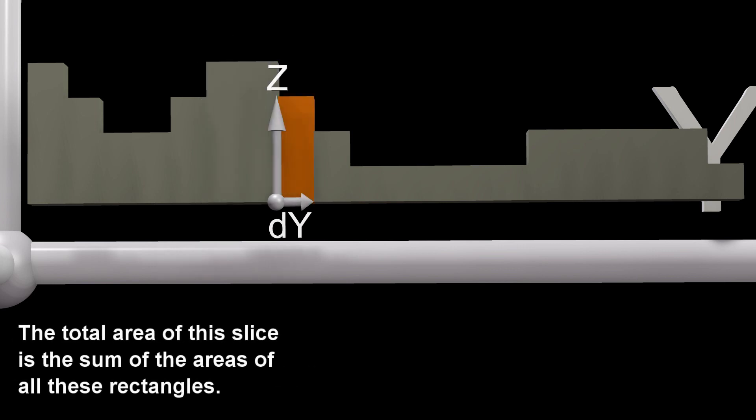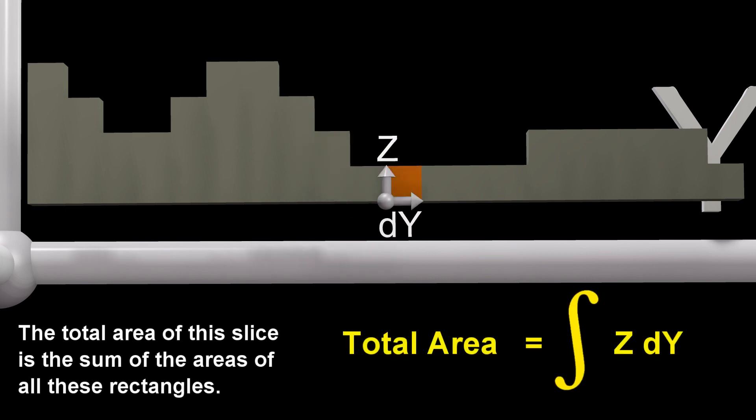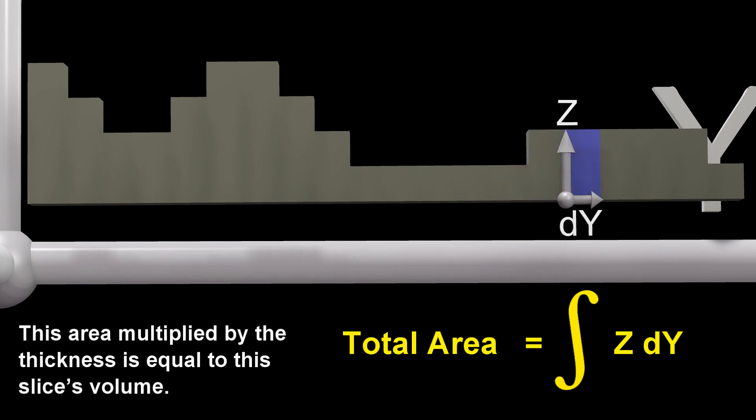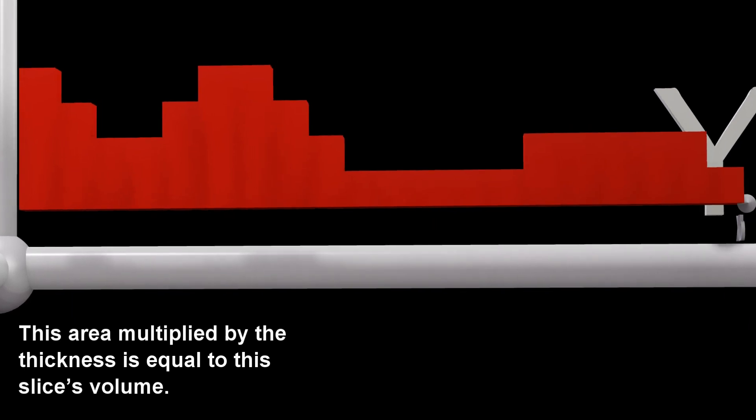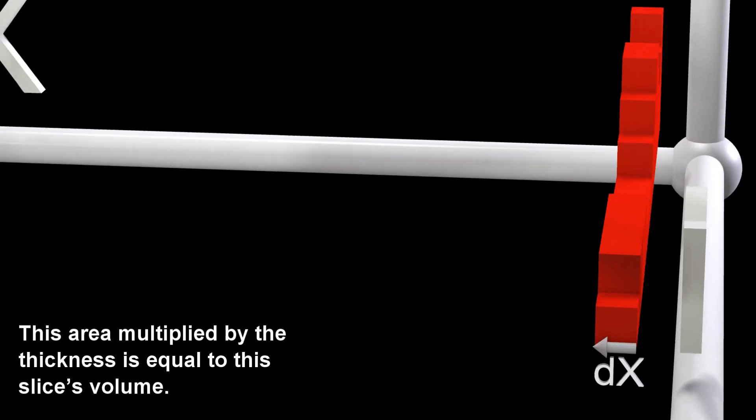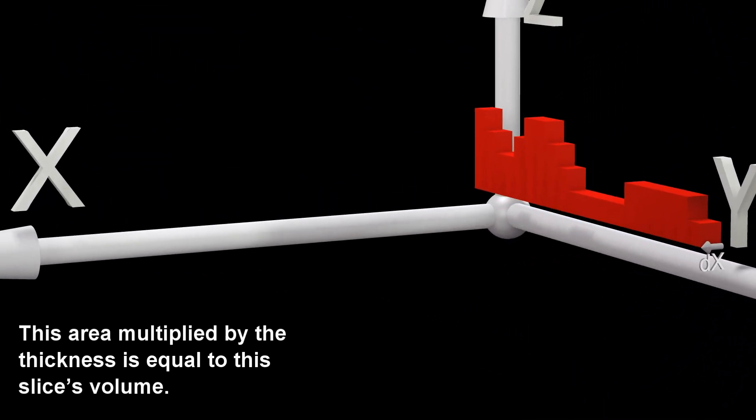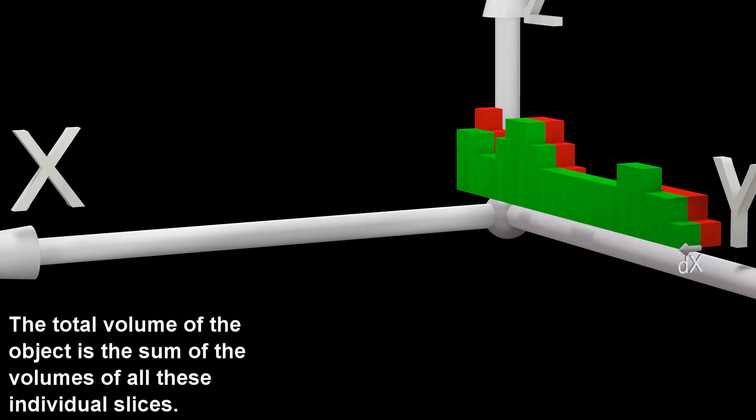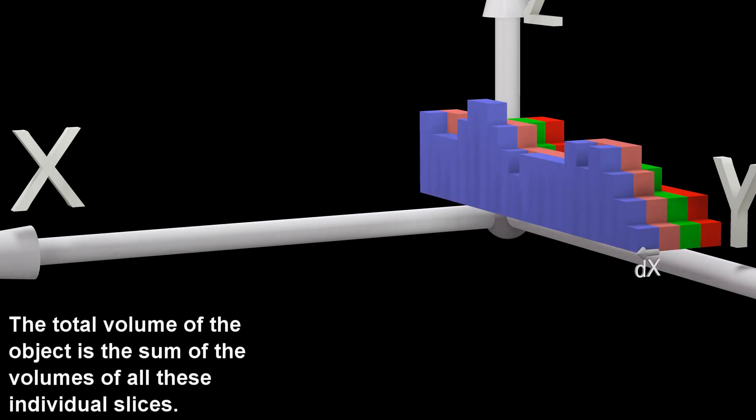The total area of this slice is the sum of the areas of all these rectangles. This area multiplied by the thickness is equal to this slice's volume. The total volume of the object is the sum of the volumes of all these individual slices.